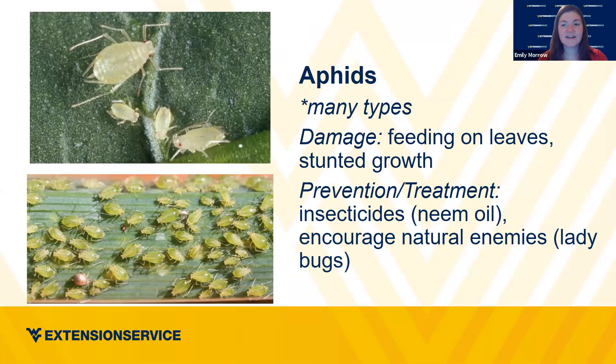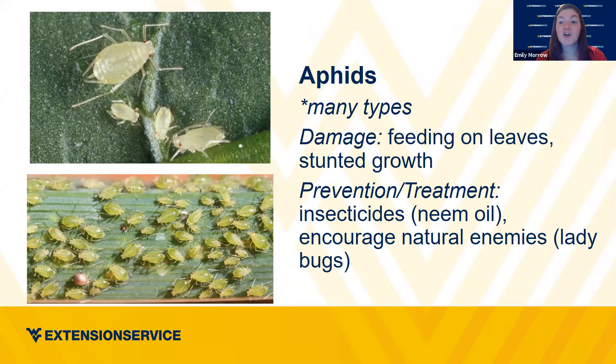Aphids — there are many different types, and different ones feed on different types of plants. You'll notice they feed on the leaves, they're usually present in high numbers, and they can cause stunted growth of the plant. For prevention, on the insecticide side you can use neem oil, which helps smother them out — it coats the leaf, which is what they feed on, so they don't have a food source. You can also encourage natural enemies like ladybugs.